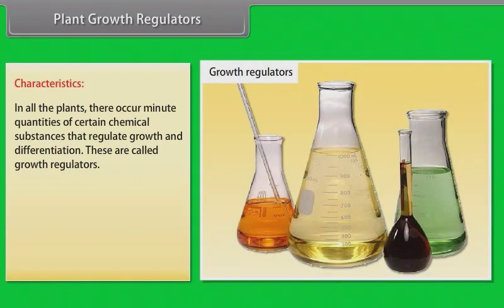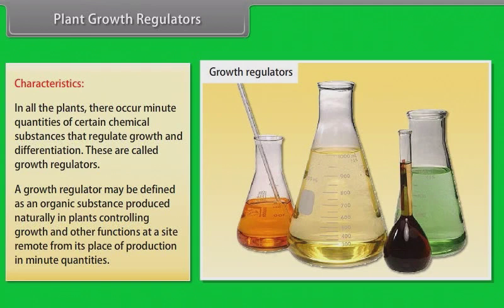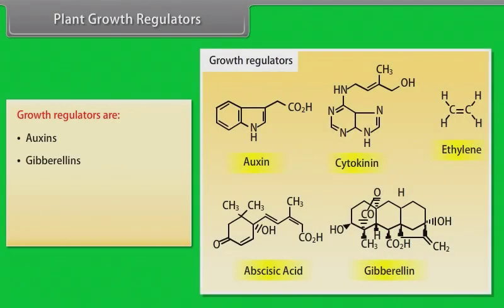Plant growth regulators - characteristics. In all the plants, there occurs minute quantities of certain chemical substances that regulate growth and differentiation. These are called growth regulators. A growth regulator may be defined as an organic substance produced naturally in plants, controlling growth and other functions at a site remote from its place of production in minute quantities. These are auxins, gibberellins, cytokinins, ethylene, and abscisic acid.